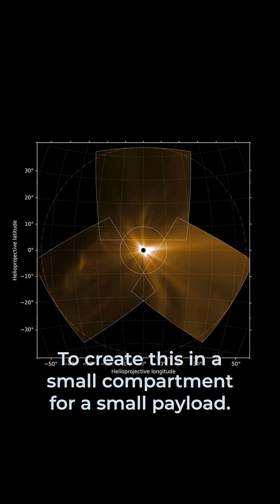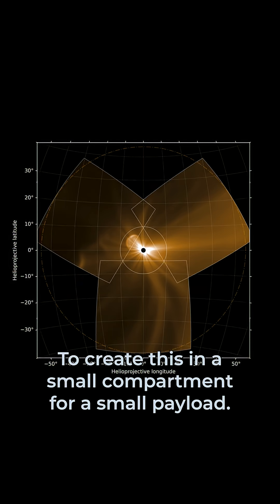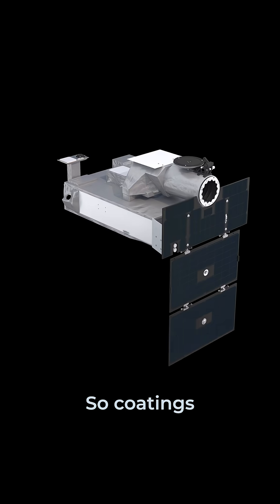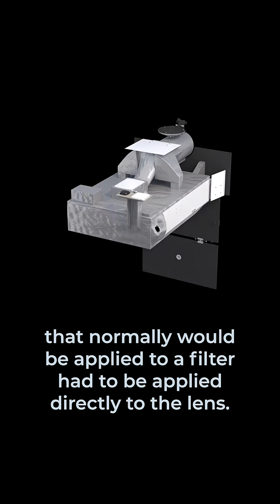To create this in a small compartment for a small payload, they had to reduce the number of instruments in their system, so coatings that normally would be applied to a filter had to be applied directly to the lens.